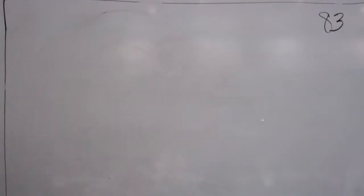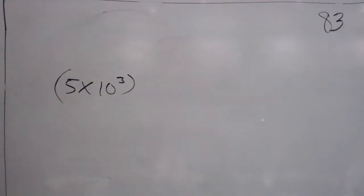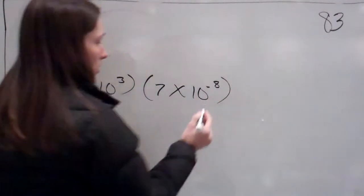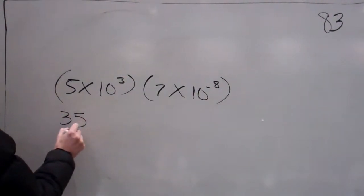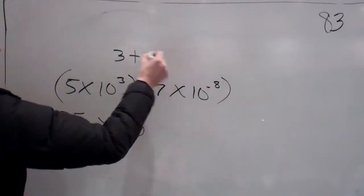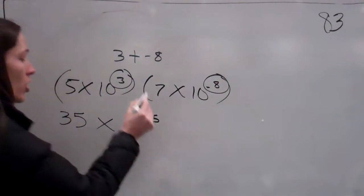Last problem. So, 5 times 3. 5 times 10 to the third power. 7 times 10 to the negative 8 power. Step number 1. 7 times 5. 35. Step number 2. 3 plus my negative 8. What am I going to end up getting when I add my exponents? 3 plus negative 8. What did you say? Negative 5. Negative 5.